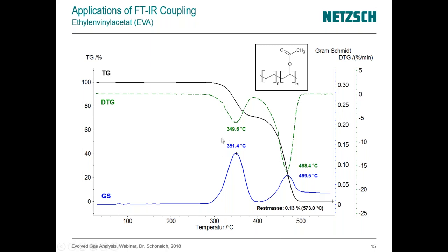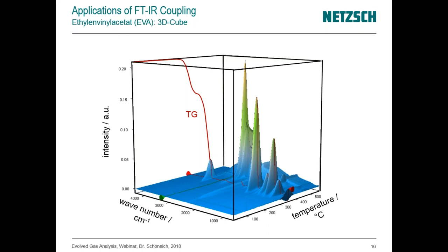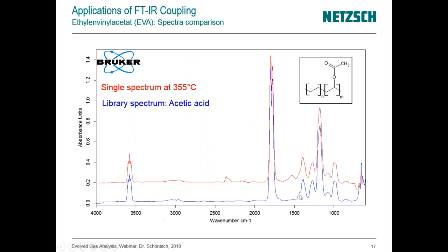To get more information about what is happening — for instance at 350°C — we go to the FTIR data, typically presented as a 3D cube with axes of wavenumber, temperature, and intensity. This cube consists of many continuously measured spectra stacked along the temperature axis. For analysis, we cut this cube at a certain temperature point — for instance, the 350°C region — and end up with an extracted spectrum. We can then compare this against library spectra, and in this case we get a library hit for acetic acid from the NIST database, with quite good correspondence.